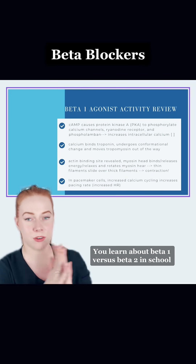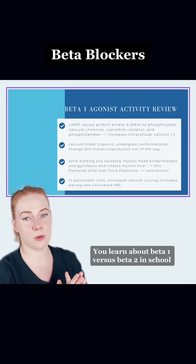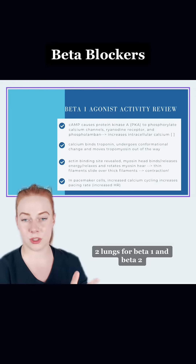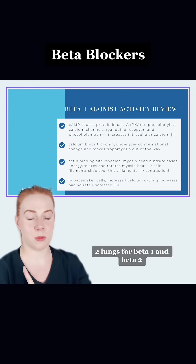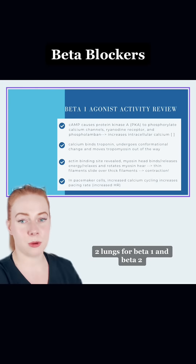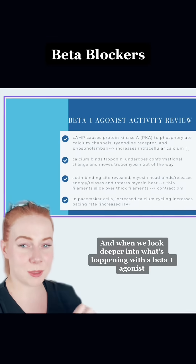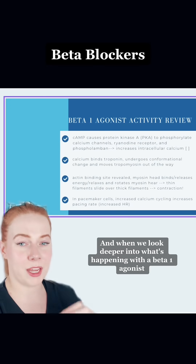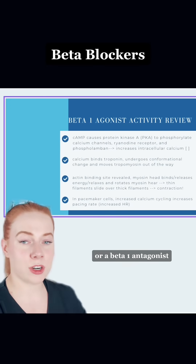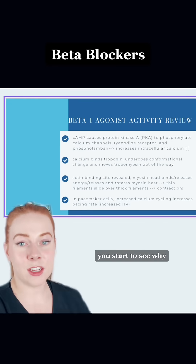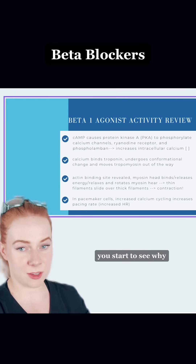You do learn about beta 1 versus beta 2 in school, and you might have learned one heart, two lungs for beta 1 and beta 2, but it's a little bit more than that. And when we look deeper into what's happening with a beta 1 agonist or a beta 1 antagonist, you start to see why.